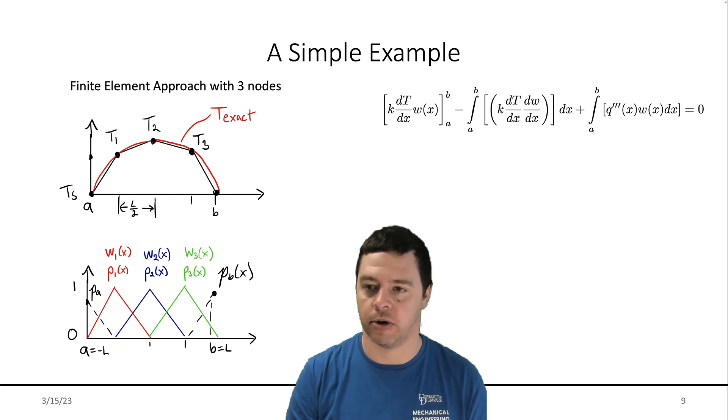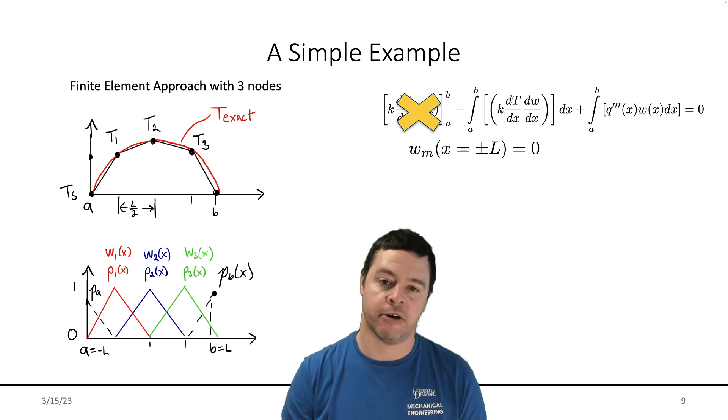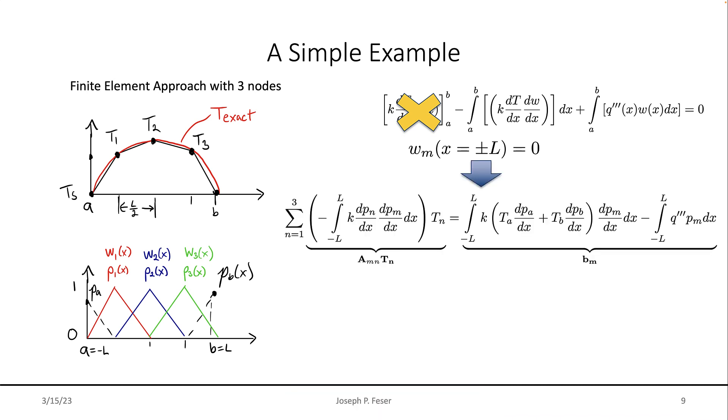So here is our weak form. We have already said that we're going to specify the temperature, which means we only need the three testing functions W sub X. None of those three testing functions are nonzero on the boundary. And that means that the very first term here goes away. There is nothing to set up associated with the boundaries here.